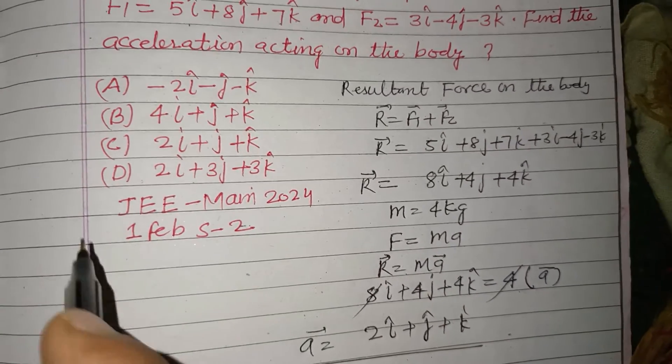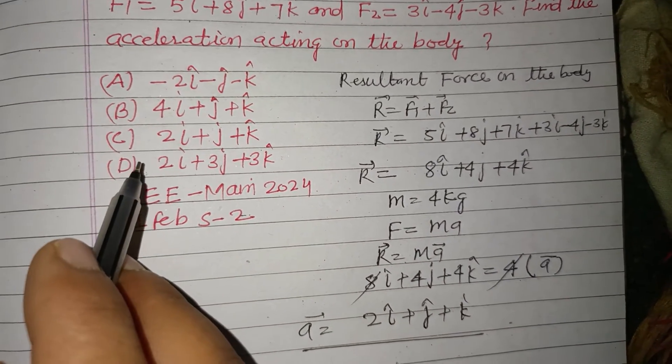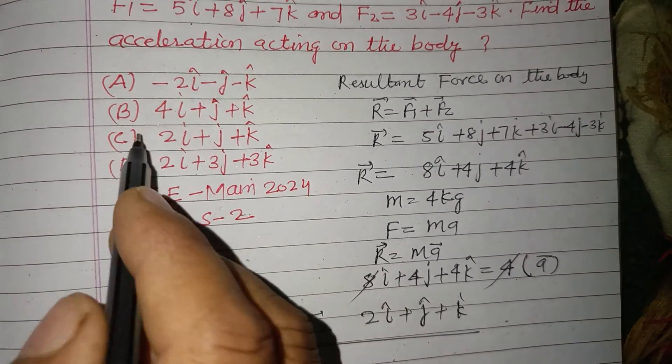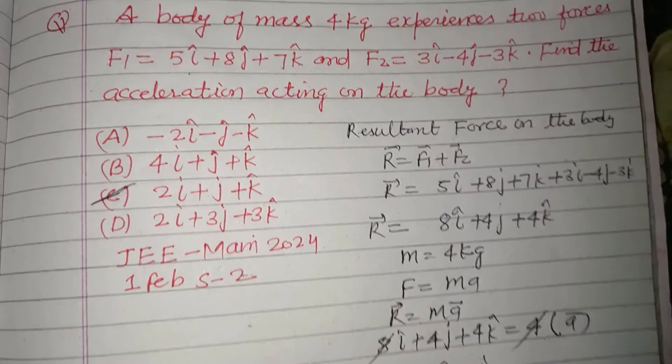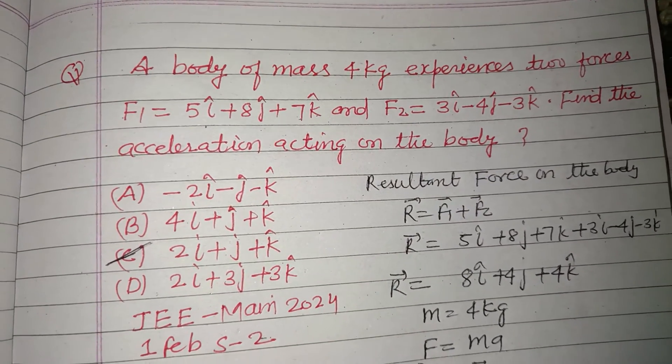Acceleration of the particle is 2i cap plus j cap plus k cap. So C is the correct answer of this question. I hope you got it. Please like the video, subscribe the channel. Thanks for watching.